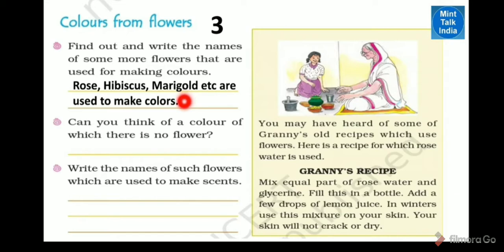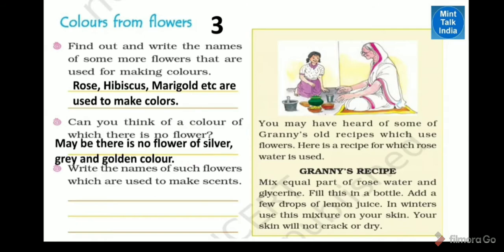Can you think of a color for which there is no flower? For example, silver color, grey color, and golden color — these are colors that have no corresponding flower.